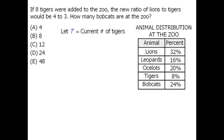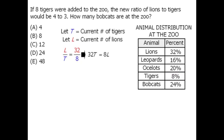To begin, let's let T equal the current number of tigers and L equal the current number of lions. From our table, the current ratio of lions to tigers must be 32 to 8, because 32% of our animals are lions and 8% are tigers. Taking this equation and cross multiplying, then dividing both sides by 8, we get L equals 4T.